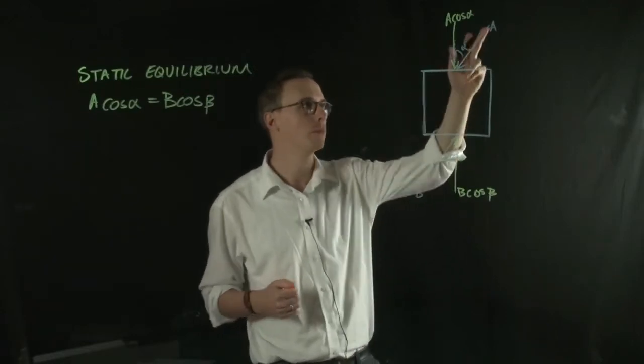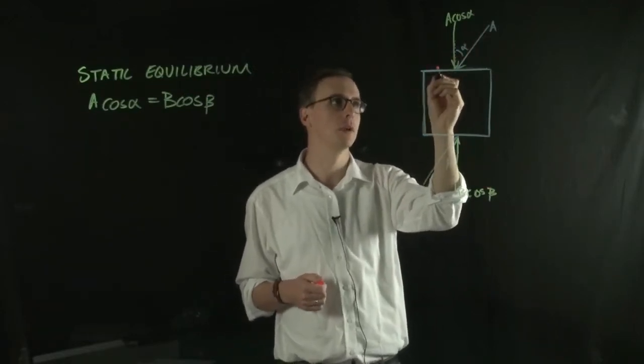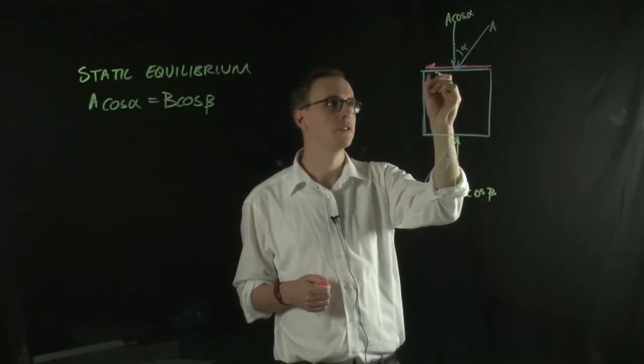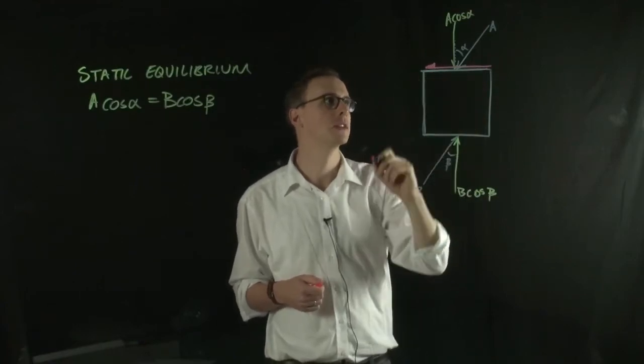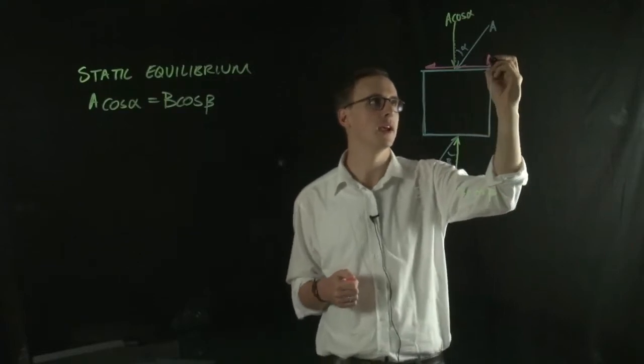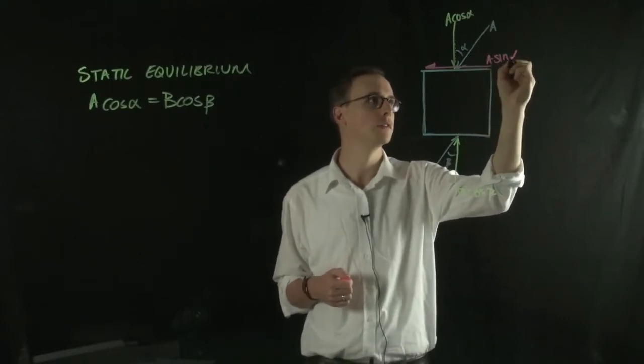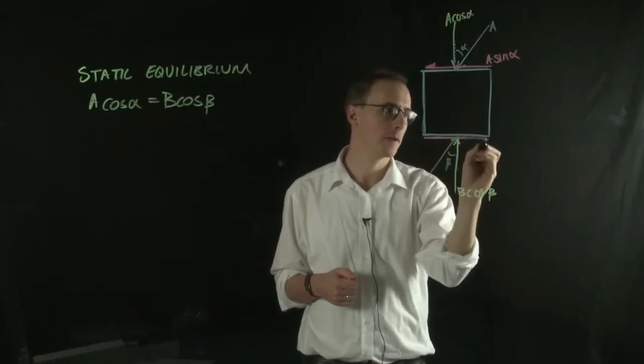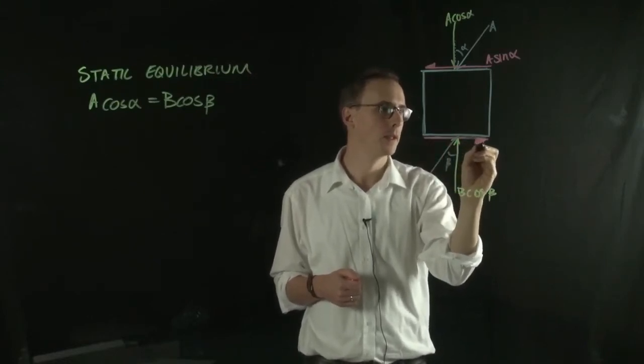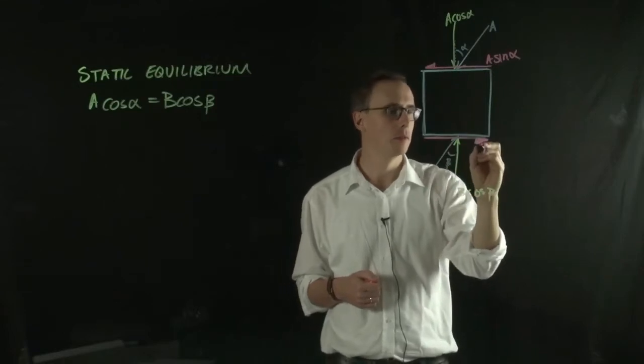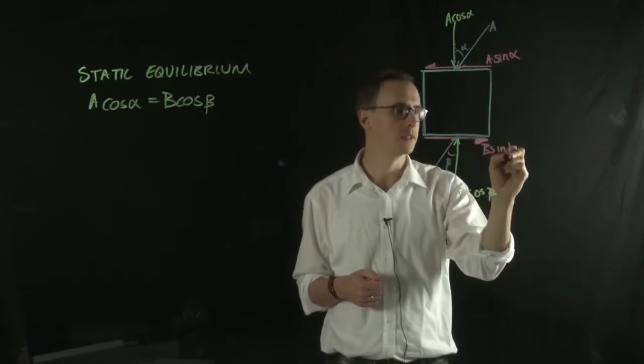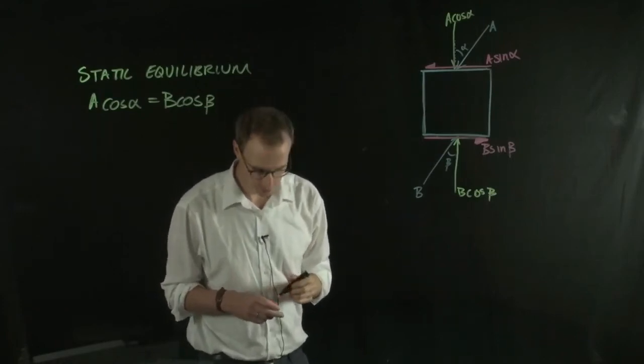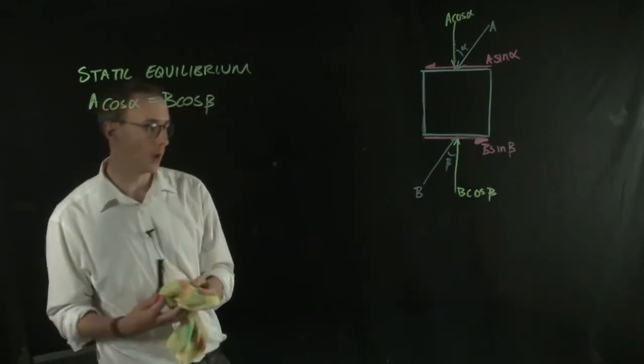So if we resolve A into its horizontal component, it would be a shear force acting on this surface. And that would be equivalent to A sine alpha. And similarly, B has a shear force acting at B sine beta. So we can get rid of the blue lines.